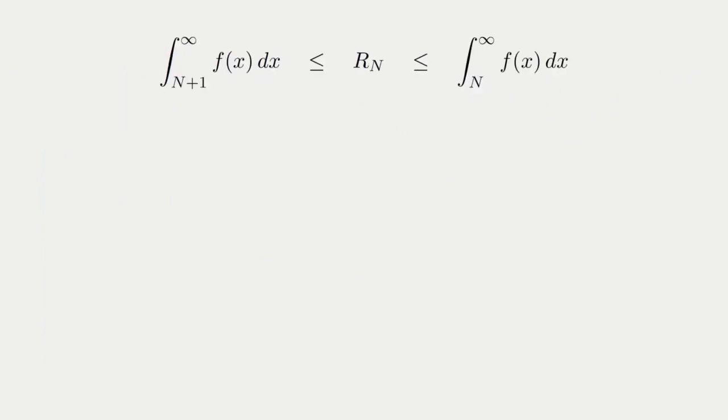But we're not done yet. We can actually use this remainder estimate to squeeze out one more useful result about the true sum of a series. Remember that the remainder, R sub n, is just the sum of all the terms that are not a part of the partial sum, S sub n.